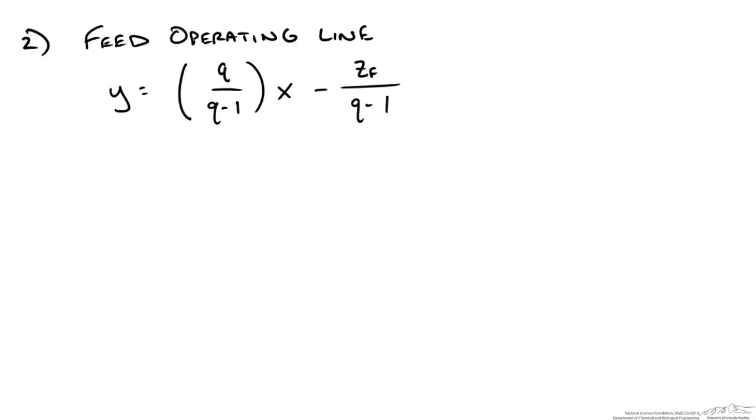So what is our feed quality? Our feed quality is an indication of how much of our feed is liquid or vapor. We can write this as a balance of our liquid flow rates in and out of our feed plate over the amount that we feed.